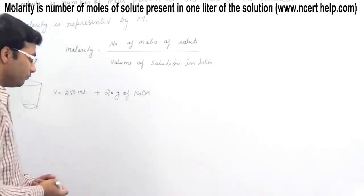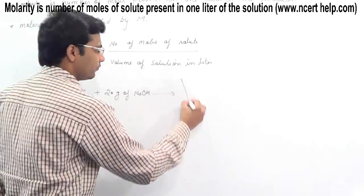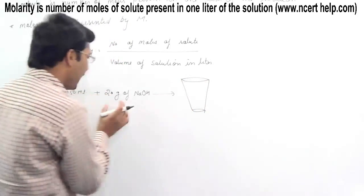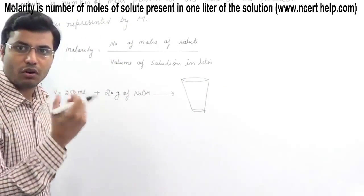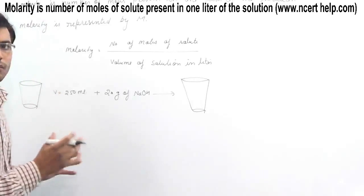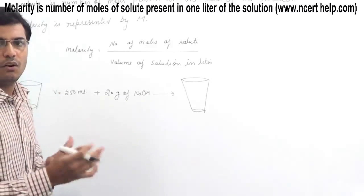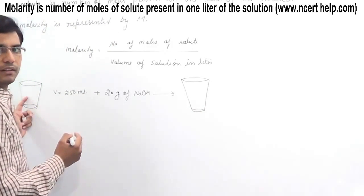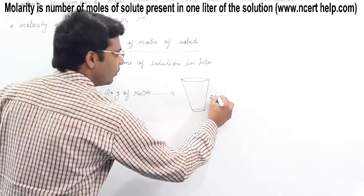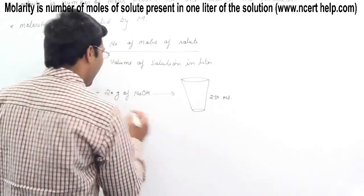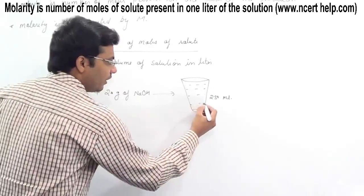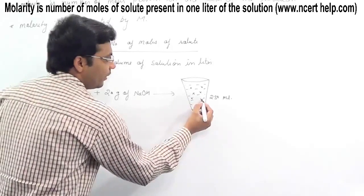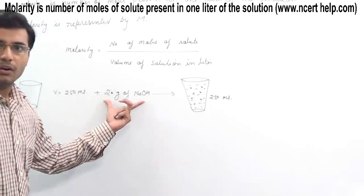We are taking 20 grams of sodium hydroxide (NaOH) and making a solution. Since NaOH is in solid state, there will be approximately no change in volume. So the volume was 250 mL and it remains 250 mL. This water now contains some molecules of NaOH.